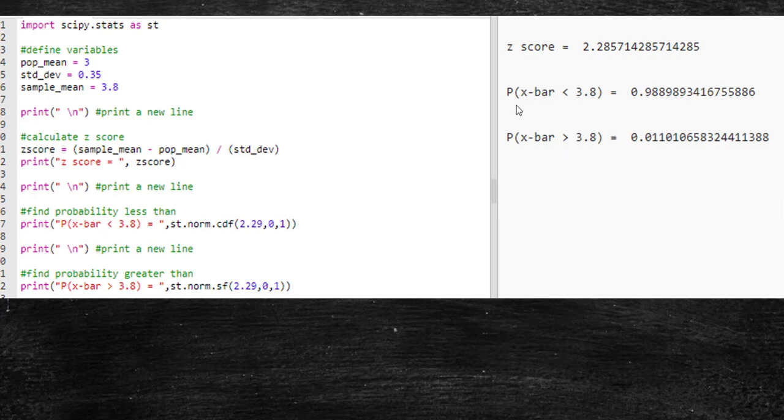As I mentioned, the probability of getting a value of 3.8 seconds or less is very high. But the probability of getting something more than 3.8 seconds is very small, which would be unusual.